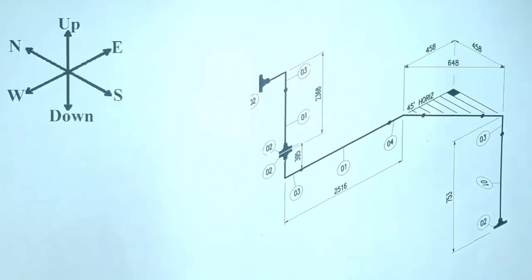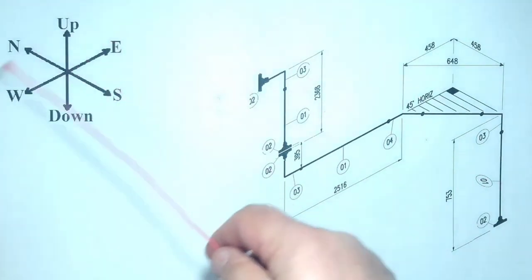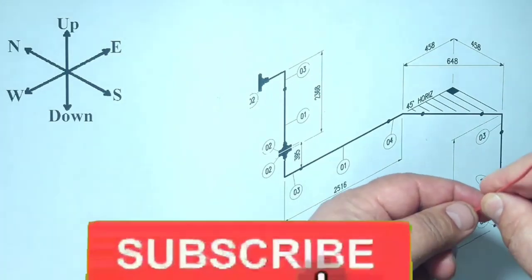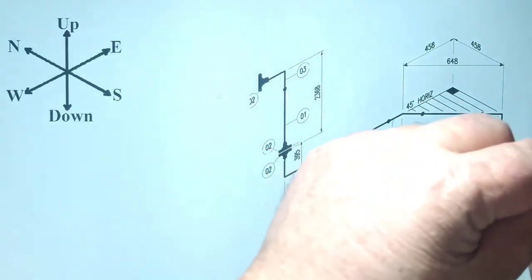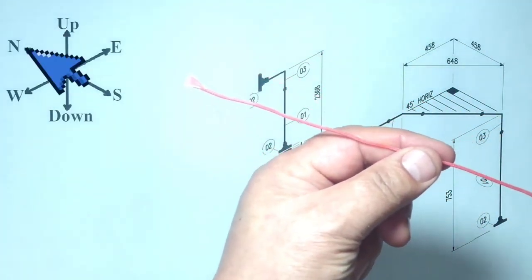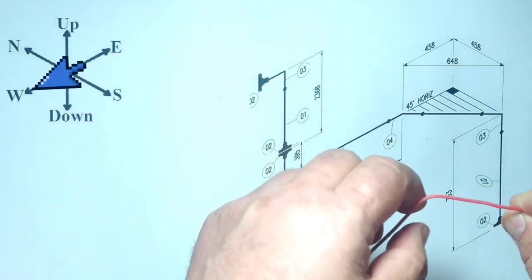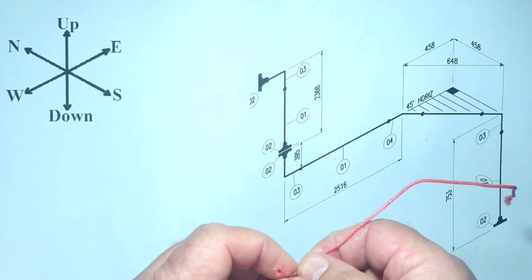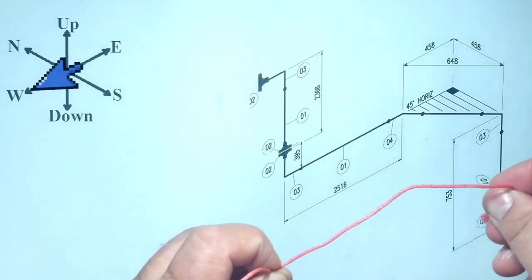Now let's bend the wire of this pipe drawing. This is our wire, the sketch showing the directions, and this is the pipe isometric drawing. With the help of this sketch, let's bend the wire of the pipeline. Since the pipeline is traveling to the up direction, we hold the wire in the up direction. Then the wire bends first to the north, then to the west. Then the wire continues to the west direction. At this point the wire travels to the up again. At this point the wire bends to the west. The wire is ready.